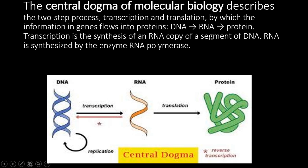Transcription is the process by which the information in DNA is copied into RNA. Both DNA and RNA are in the language of nucleotides — the language of DNA nucleotides is transcribed into the language of RNA nucleotides. From RNA it is then translated into proteins, converting the language of nucleotides into the language of amino acids. DNA cannot directly synthesize protein; it does so with an intermediate called the RNA molecule — this is the central dogma.